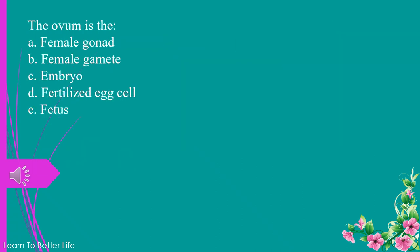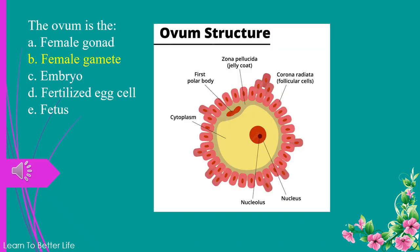The ovum is the: a. female gonad. b. female gamete. c. embryo. d. fertilized egg cell. e. fetus. The answer is b. female gamete.